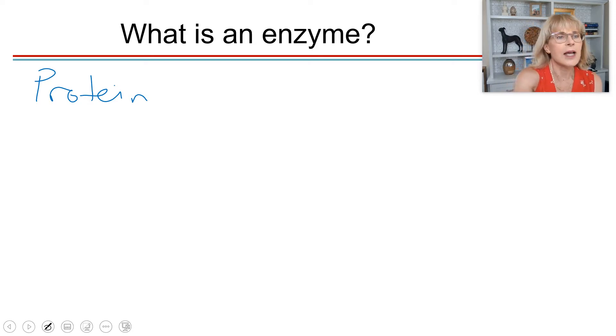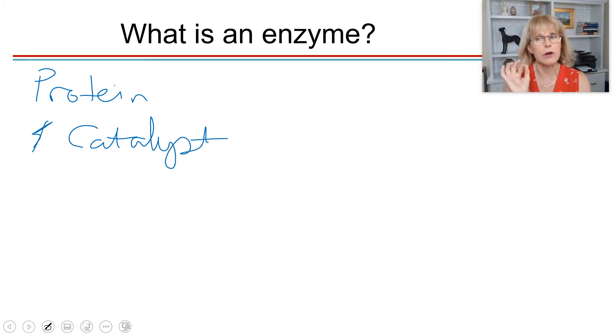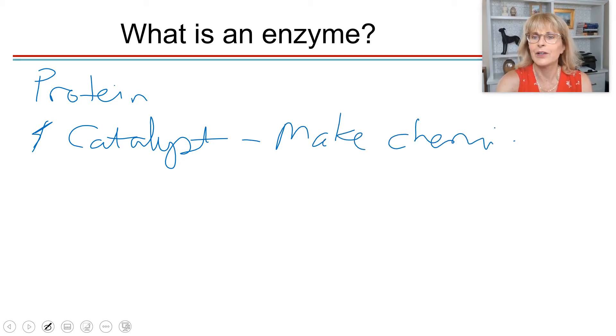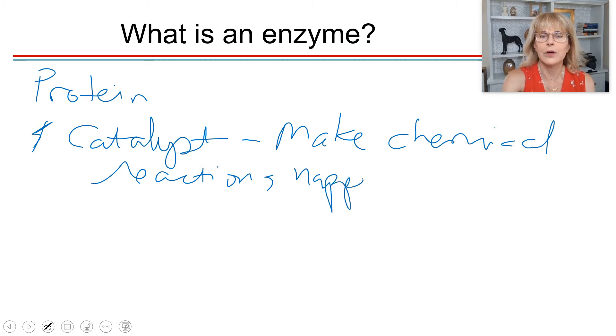And then enzymes act as catalysts. An enzyme is a catalyst. Now, catalysts are substances that make chemical reactions happen faster. Catalysts are substances that make chemical reactions happen faster.